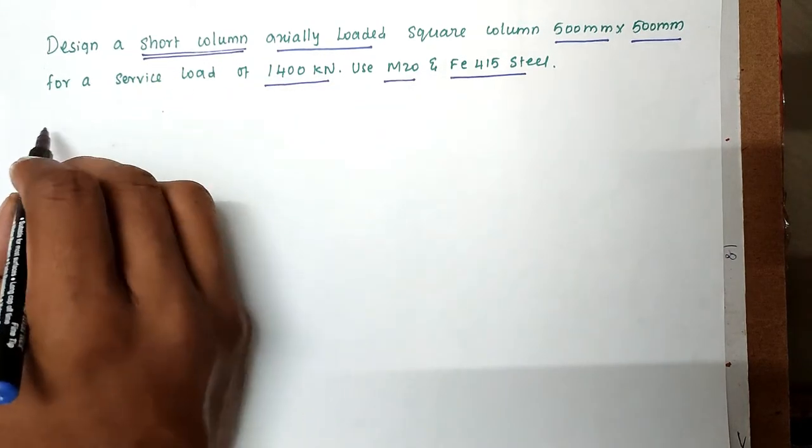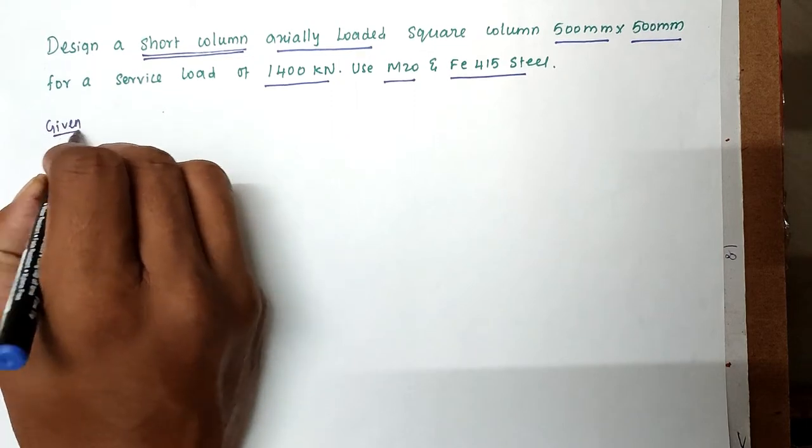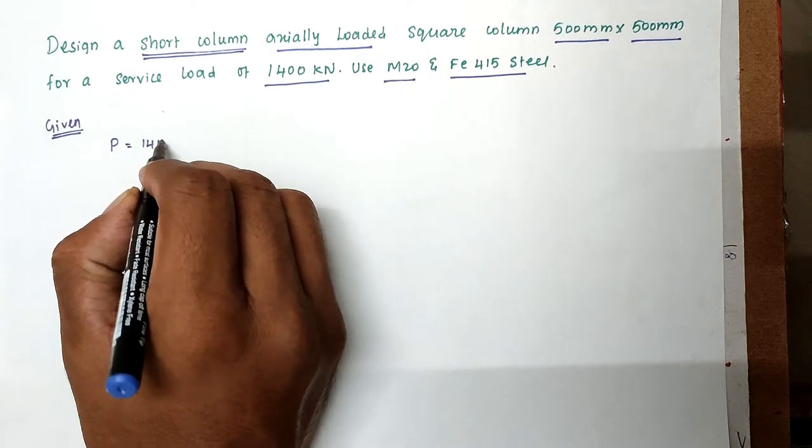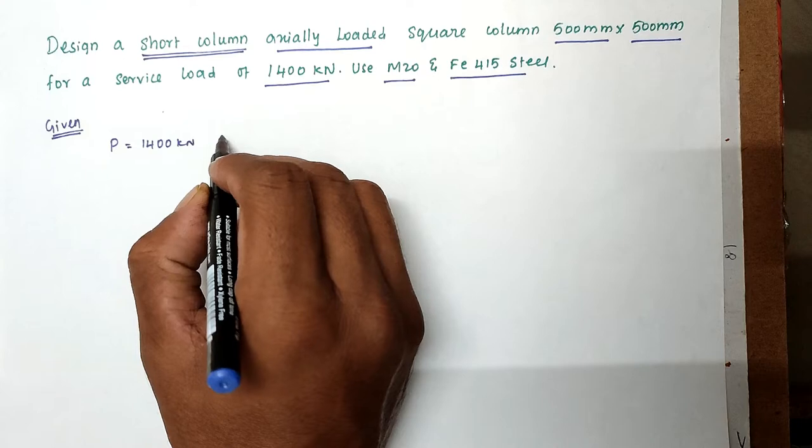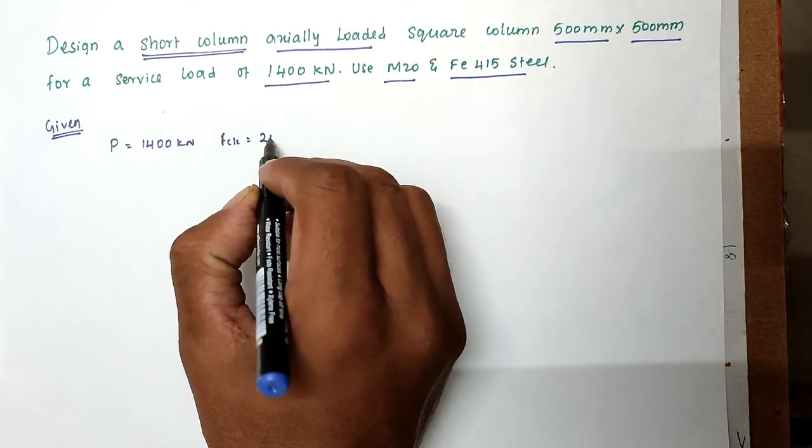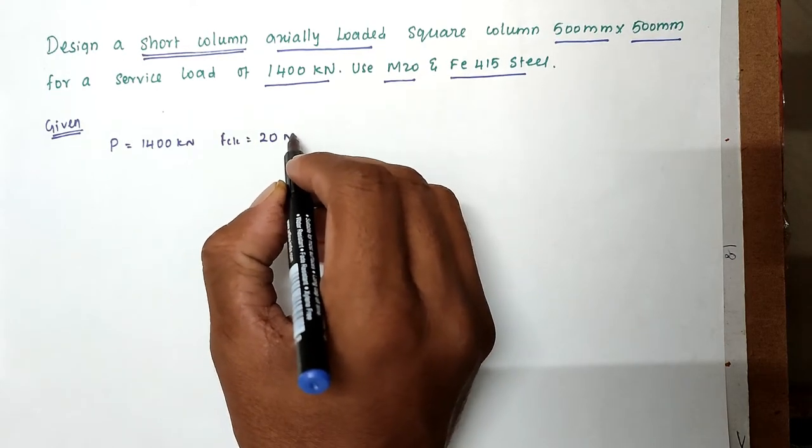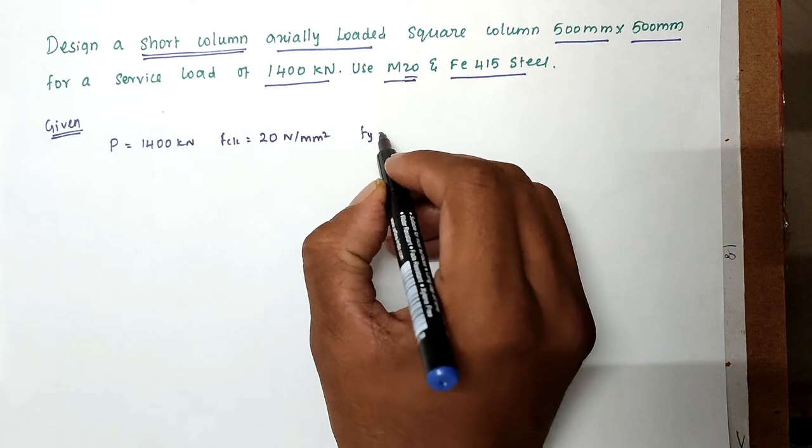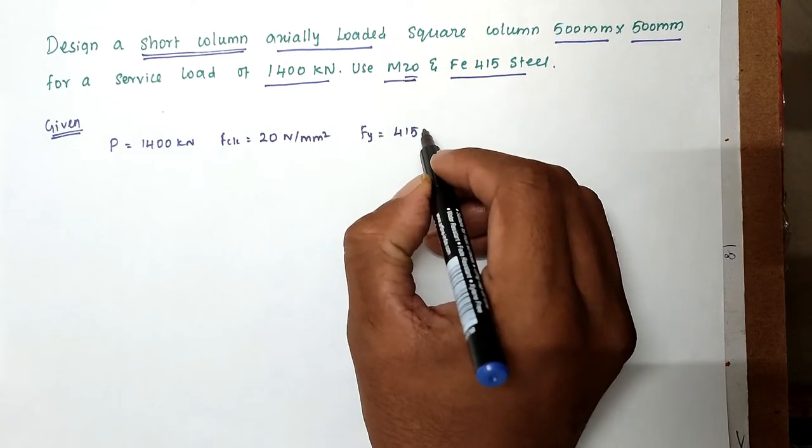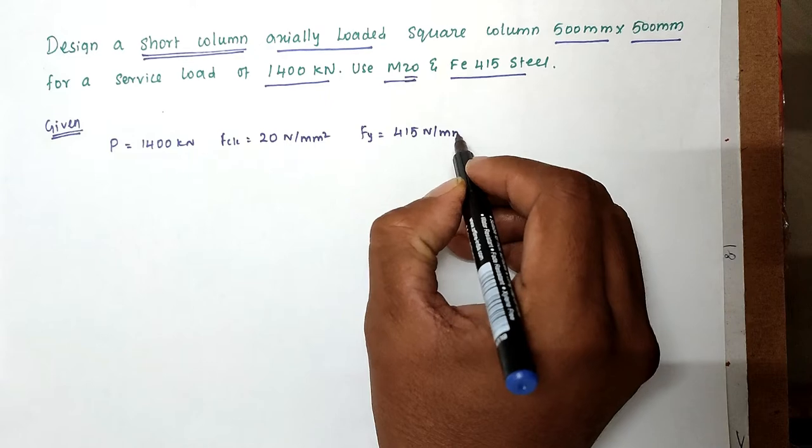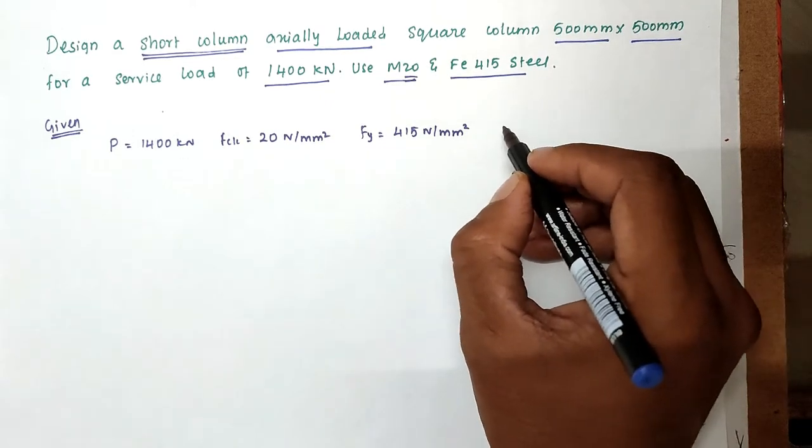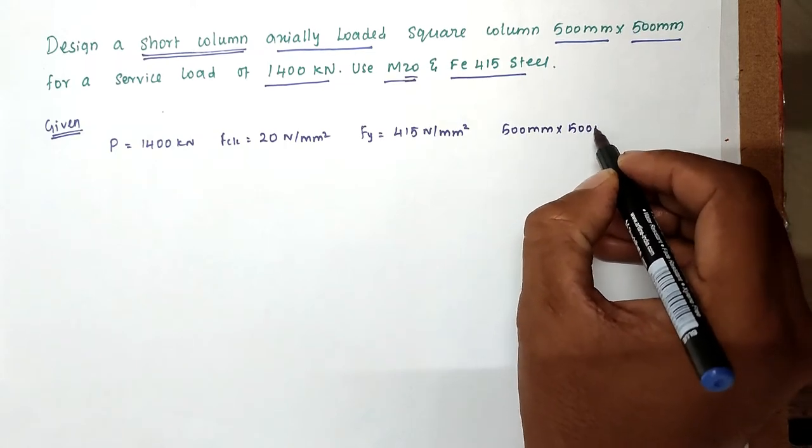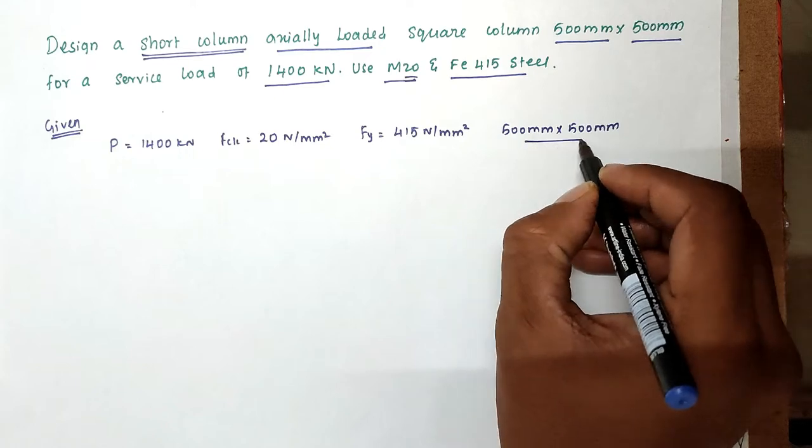So the solution, first is given data. So we have to notice that it is axially loaded and not eccentrically loaded. Then square column 500mm into 500mm for a service load of 1400 kN use M20 grade concrete and Fe415 steel.